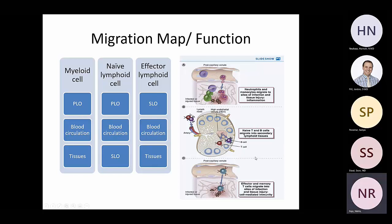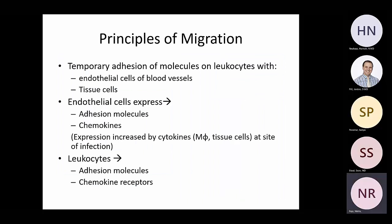There are a few principles of migration. There is temporary adhesion of molecules on the leukocytes with endothelial cells of blood vessels, allowing movement from lymphoid organs to blood, or from blood into tissues using adhesion molecules. Endothelial cells also express adhesion molecules and chemokines. The expression of chemokines on endothelial cells is increased by cytokines at the site of infection — cytokines released by macrophages or tissue cells.